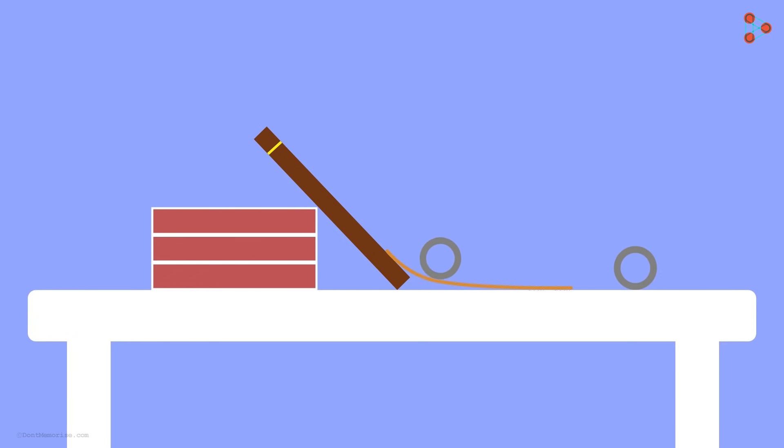What do you notice? You will see that the distance covered by the object is less in the second case. And you probably know why. The surface on which the object rolled was rougher in the second case, and clearly, the force of friction was more.